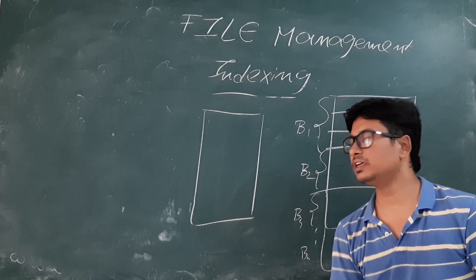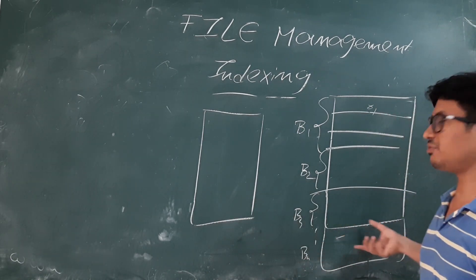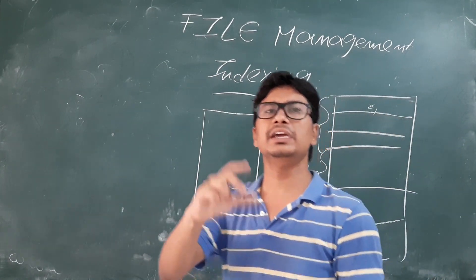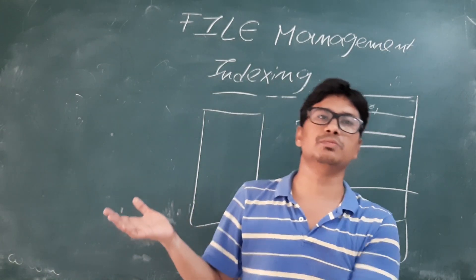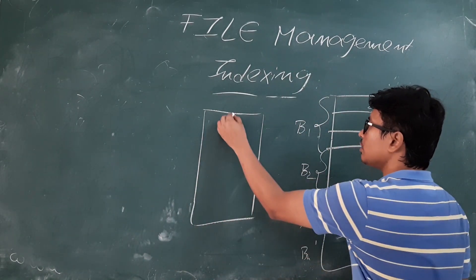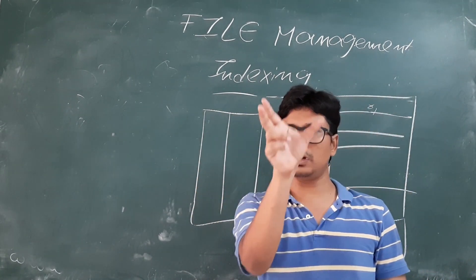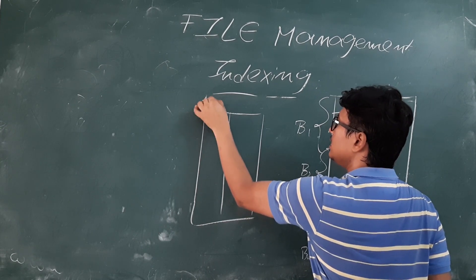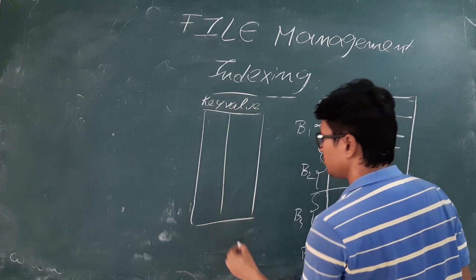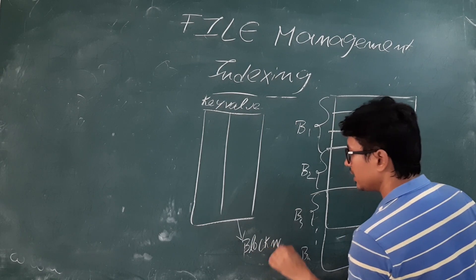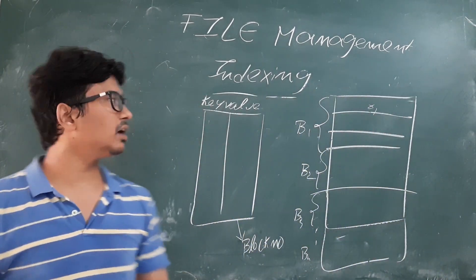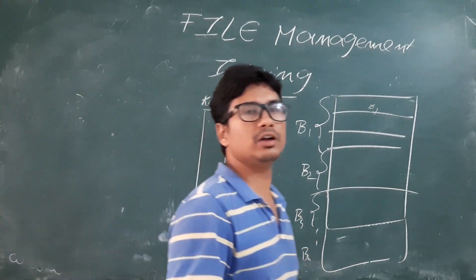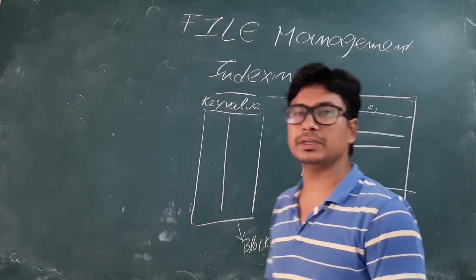The size of the index file is usually less than the data file. Just like in a textbook where the index is three or four pages while the main content may be two hundred or more pages. The index file has two fields: the key value and the block number. The key value identifies the record number, and the block number tells which block that record is stored in.